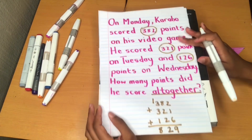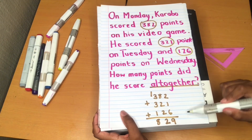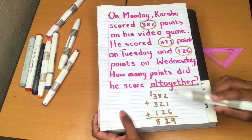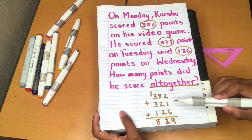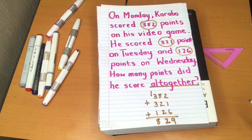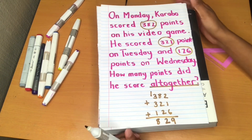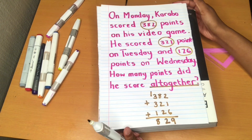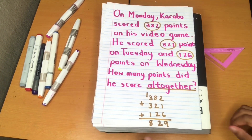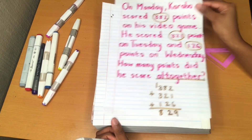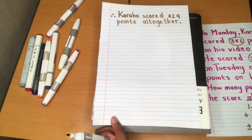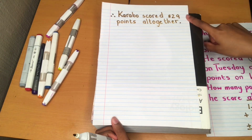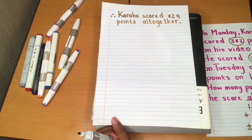We've shown our working out: 382 plus 321 plus 126 equals 829. Then we answered our word problem: 'How many points did he score all together?' Karabo scored 829 points all together.